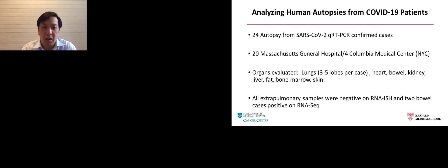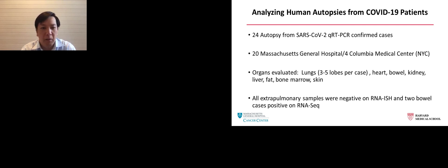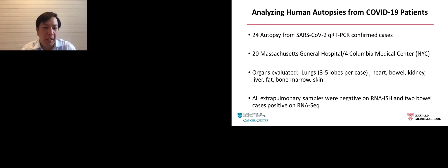20 of these autopsies were from the Massachusetts General Hospital, four from Columbia Medical Center in New York City. We analyzed a variety of organs, focusing on the lungs with three to five lobes per case. We also analyzed heart, bowel, kidney, liver, fat, bone marrow, and skin. All of the extra-pulmonary samples were negative on RNA-ISH, and most were negative by RNA sequencing. There were two cases of bowel that were low positive by RNA-seq, but we did not see this by RNA-ISH, so we don't think these are active infections in the bowel.